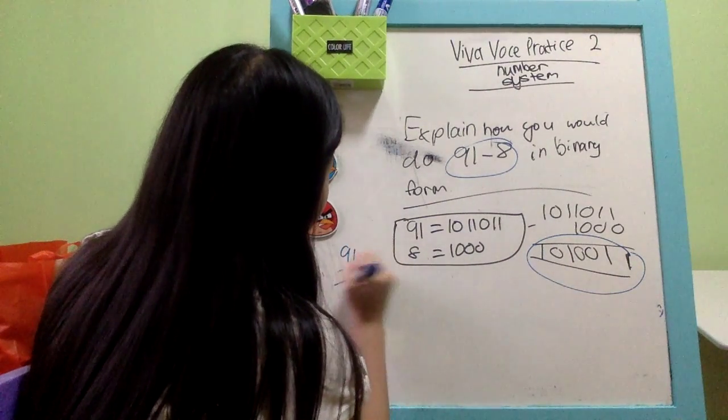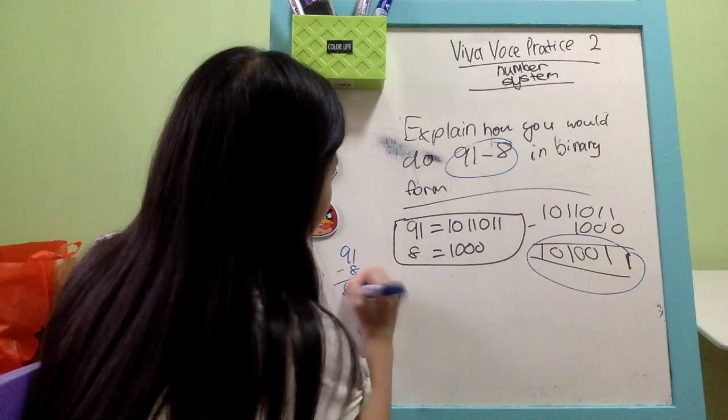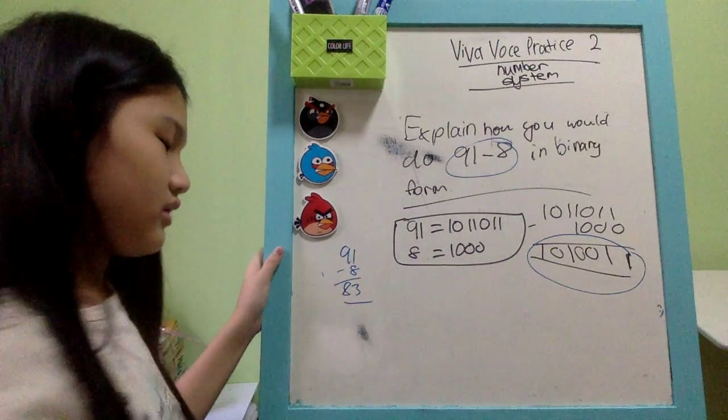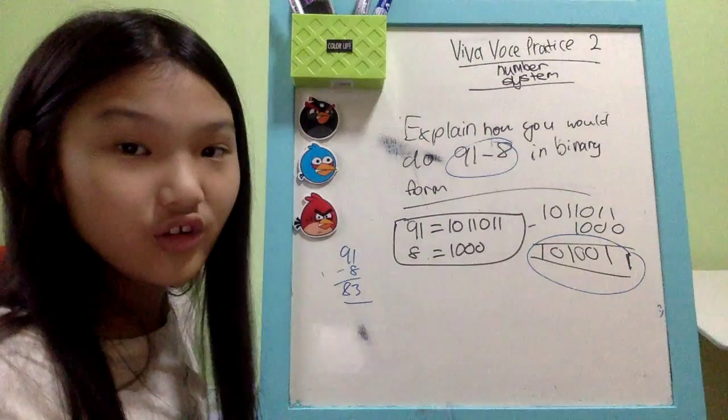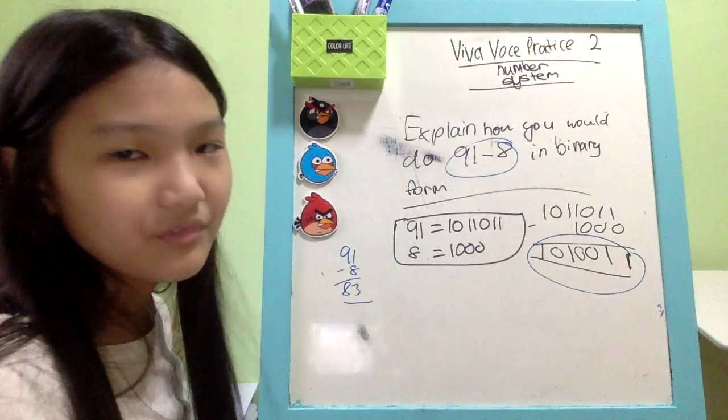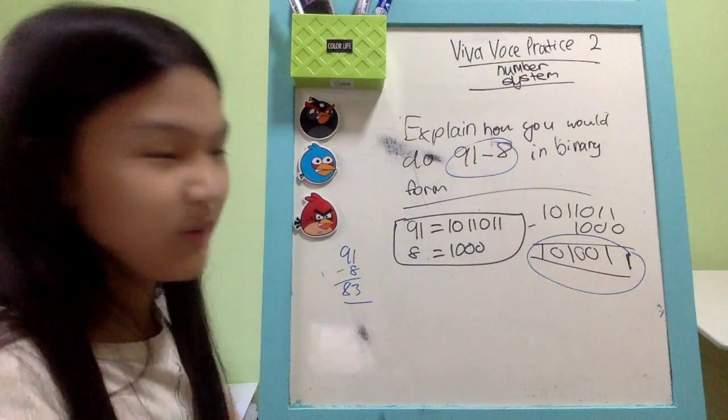91 minus 8 would be 83, am I right? Yeah. So we'll do 83. Convert 83 to binary numbers using the eight lines.